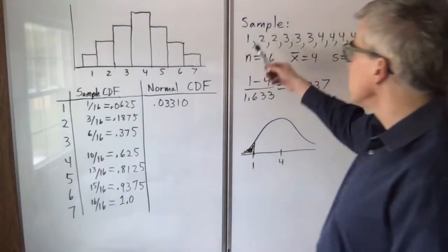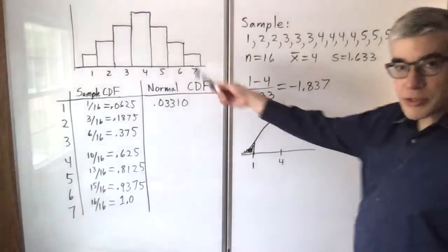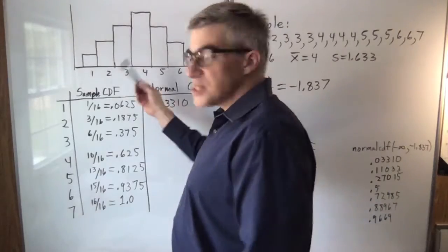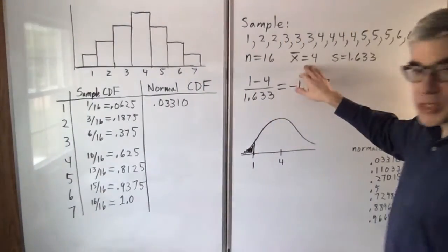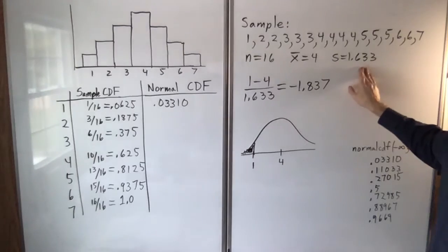I made up a sample here: 1, 2, 2, 3, 3, 3, 4, 4, 4... a triangular distribution. There are 16 data points, the sample mean is 4, and the sample standard deviation is 1.633.